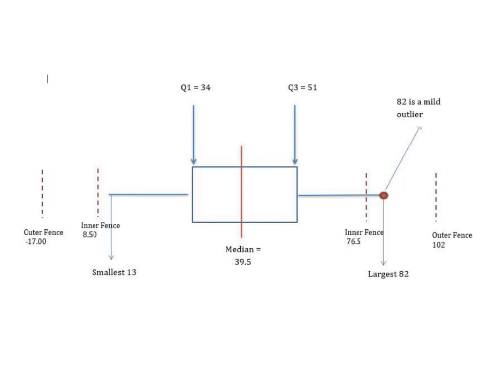My computer has created this box plot for us. So, this is what this looks like when we're done. The first thing we said we were going to do was to create our box. Our lower hinge is Q1 at 34. Upper hinge is at 51. So, the distance between the hinges is 17, which is also the IQR. I said we were going to place our median in the box. So, that's at 39.5.